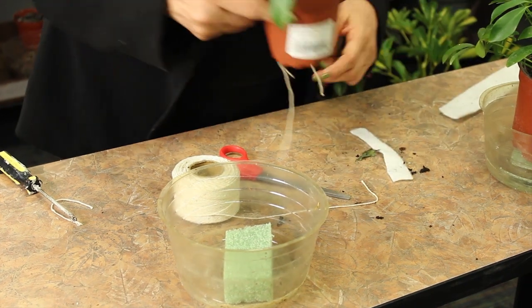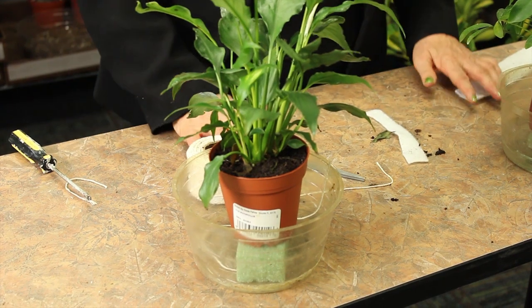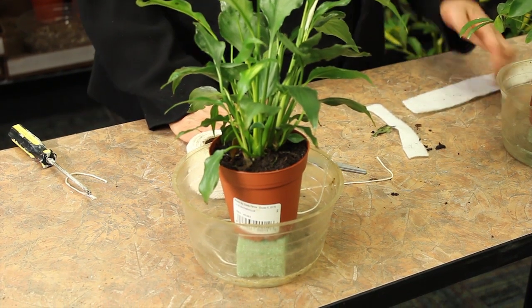Same way, we want the plant cording to go into the water and the plant to sit above, so it can sip the moisture from the soil at any time.